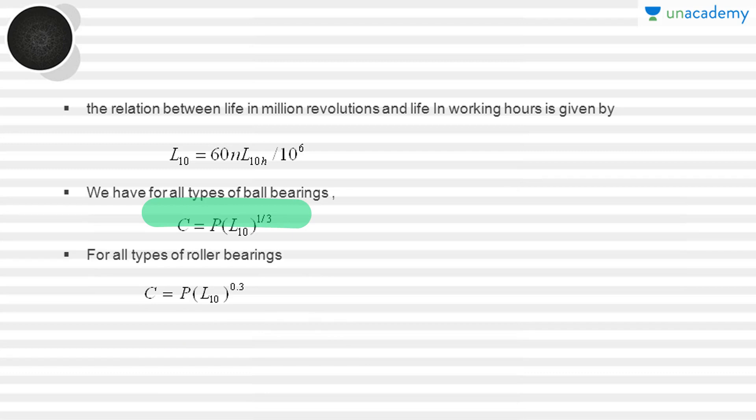For all types of roller bearings, the value of C equals P into L10 to the power of 0.3, because for roller bearings the value of p equals 10/3. That is why we get C equals P into L10 to the power of 0.3.